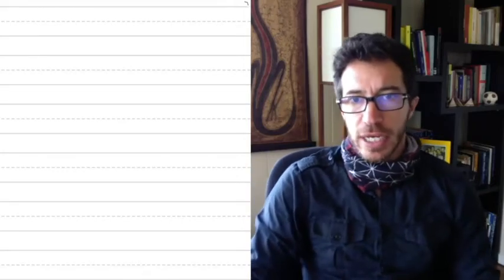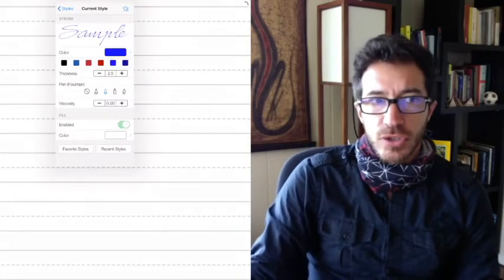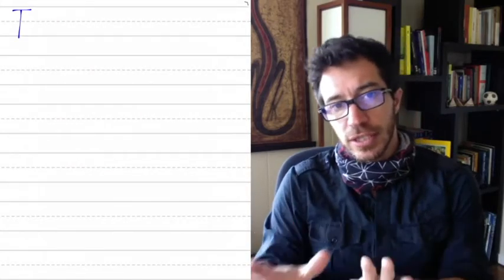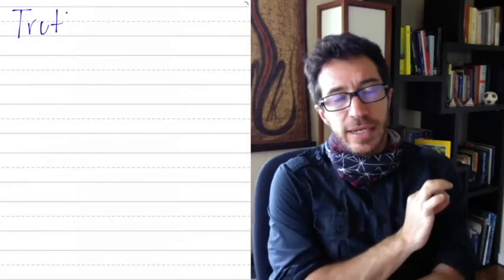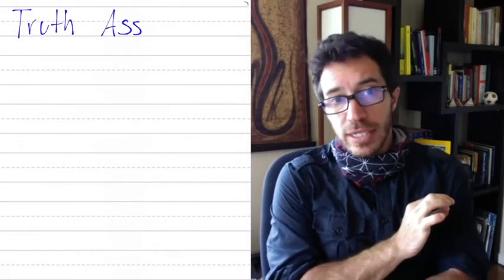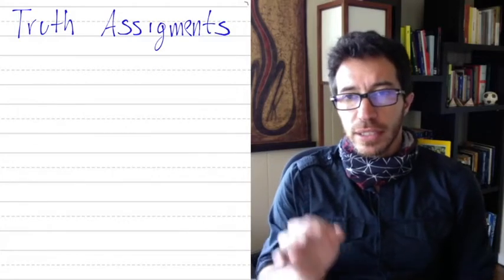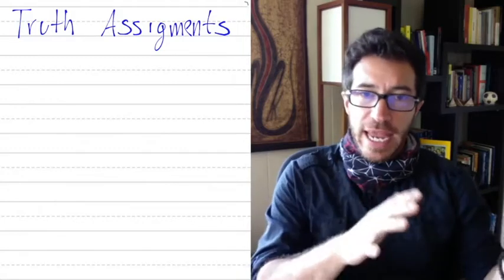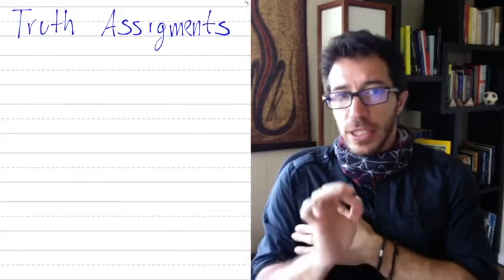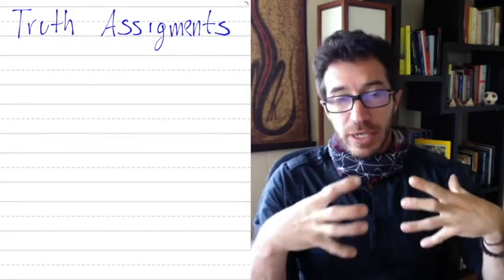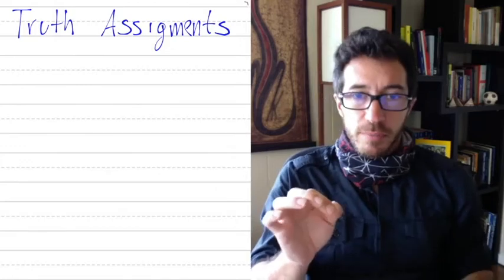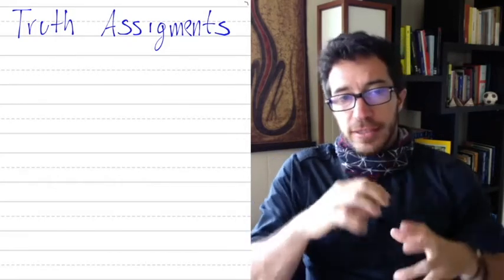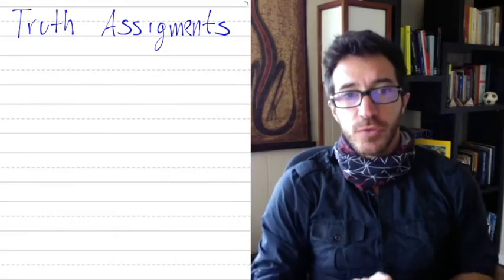In this video, we're going to be talking about truth assignments. We saw in the previous video how to define a language for sentential logic — we had a way of writing well-formed formulas built out of variables using AND, OR, NOT, etc., where the variables were representing sentences or propositions that could be either true or false, and out of them we build the larger formula or sentence.